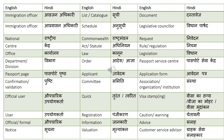Association, organization, or institution can be translated as sanstha. Visa stamp or visa stamping — visa ka thappa, visa ka mohar, ya phir visa ka mudraankan. Caution or a warning — chetavani. Advice — salah. Customer service advisor — grahak sewa salahakar.